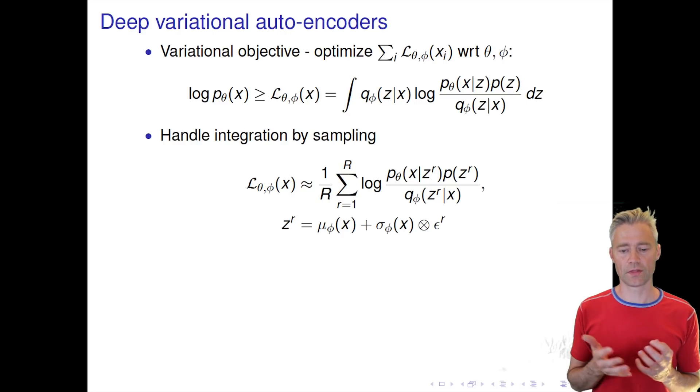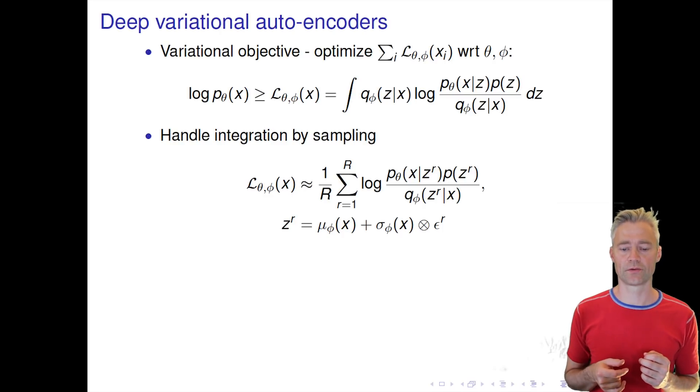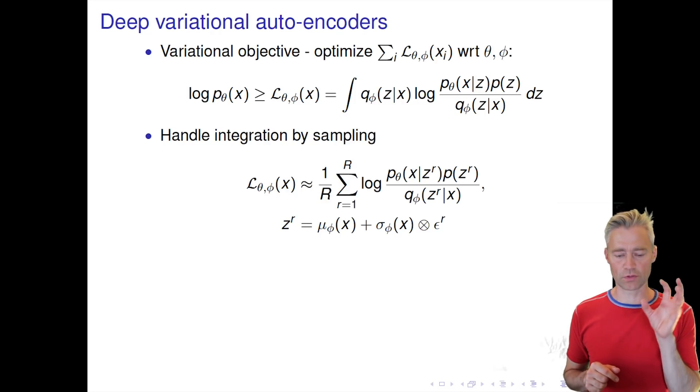This is a very simple trick that is useful once we want to make a stochastic gradient descent optimization in this case of this bound.